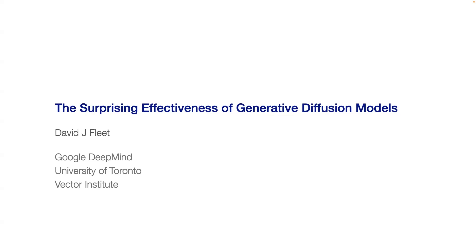At that time, the principal goals were really to learn prior distributions over data, which could help regularize inverse problems like denoising images or super resolution. The other type of problem people were trying to use generative models for was representation learning, where the goal was to try and disentangle the causal factors of variation in data — with the idea that if you had a representation good enough to synthesize images, you must really understand the data.